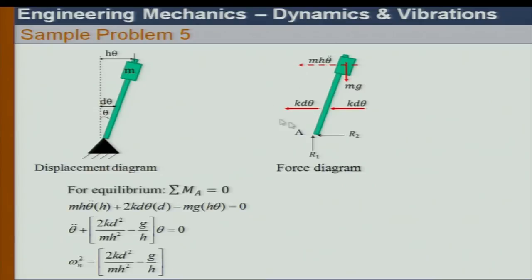The static equilibrium configuration is vertical. Once we distort, we get a disturbing torque. Taking moment about A and finding the solution gives the equation of motion.